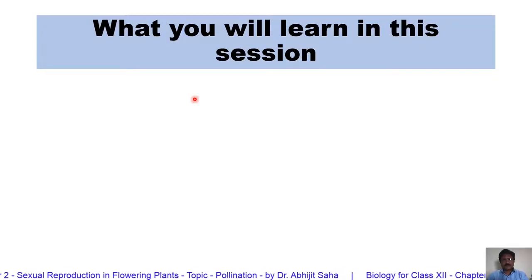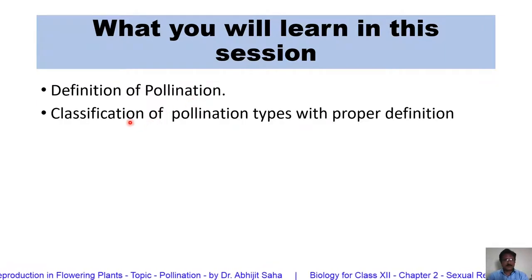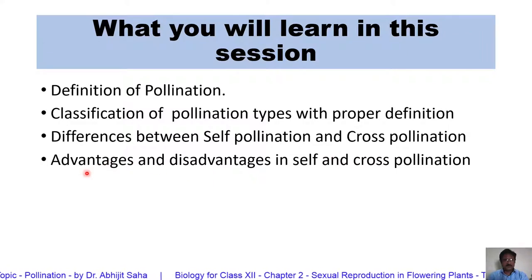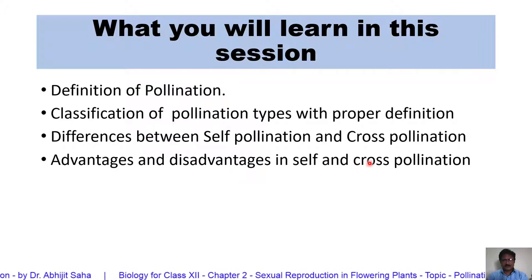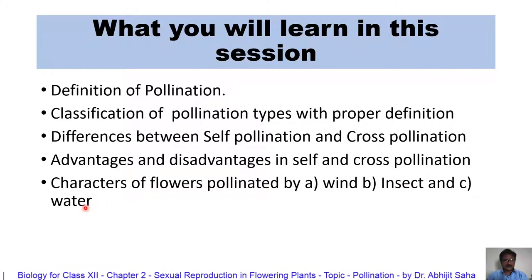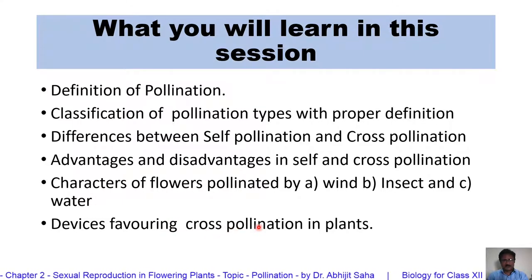In this session, we shall study the definition of pollination, the different types of pollination with their proper definitions. We will try to understand the differences between self-pollination and cross-pollination. We will learn the advantages and disadvantages in self-pollination and cross-pollination, study flowers pollinated by wind, insect, or water, and discuss characteristics of a flower which help in cross-pollination.